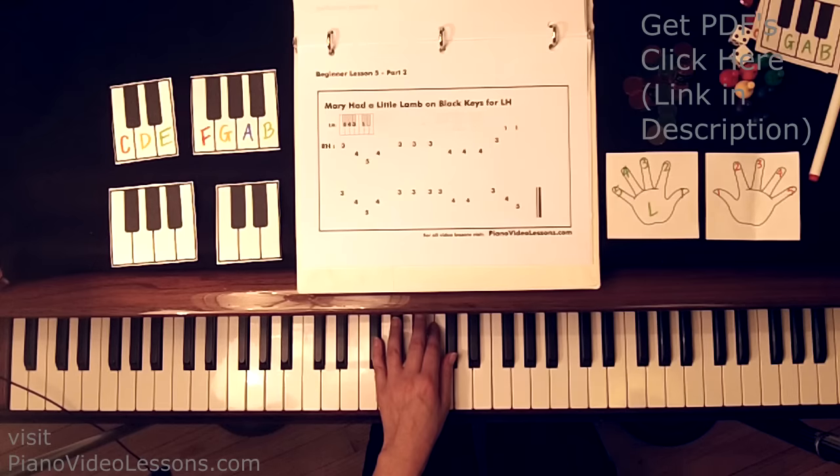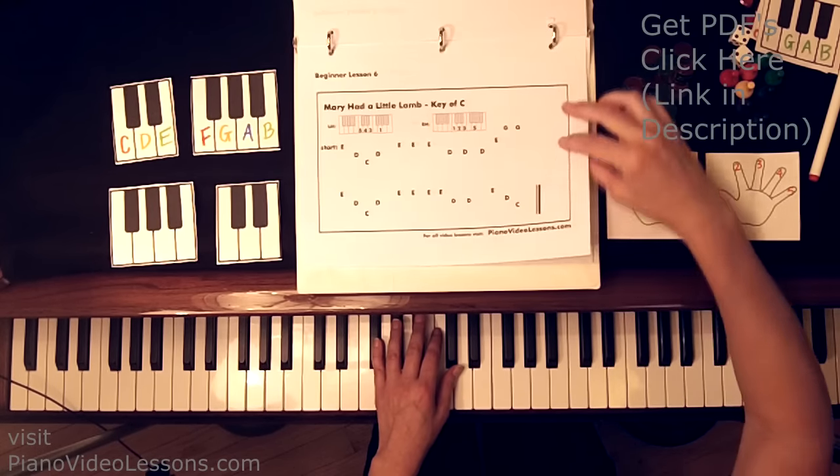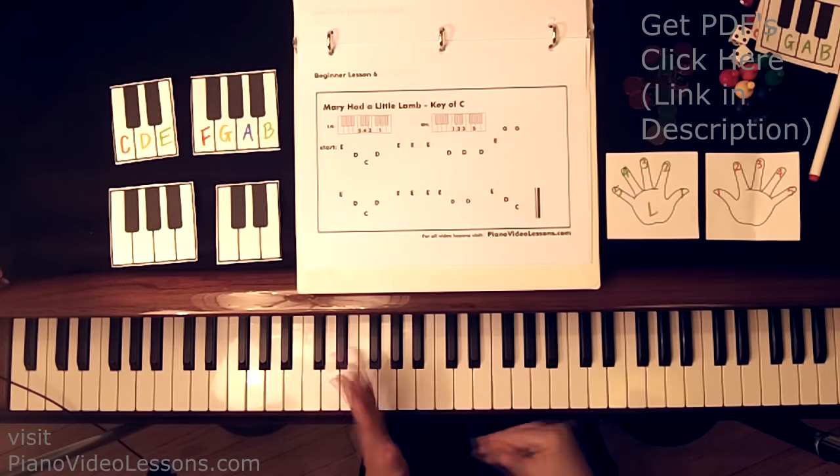Excellent. Alright, so join me in Lesson 6 where we are going to learn to play Mary Had a Little Lamb in the keys of C and G using lots of the white keys.